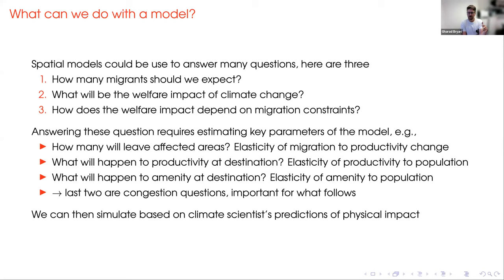We would like to know how many people will leave affected areas — a key input is the elasticity of migration to productivity changes, which I might be able to estimate. I'd also want to know what will happen to amenity at the destination where migrants move to — that's the elasticity of productivity to population. These last two are congestion questions: as people move into destinations, those destinations become more congested. They're going to be key to my claim that we're not quite at full external validity with our models. But if I have those parameters, I can simulate based on climate scientists' predictions of physical impacts — for example, that rural areas in southeast Bangladesh will see a large drop in productivity.